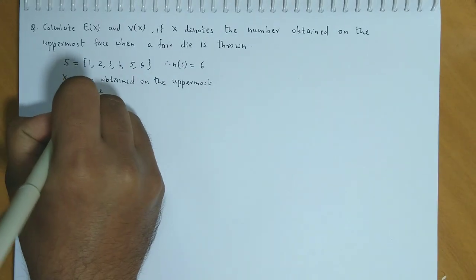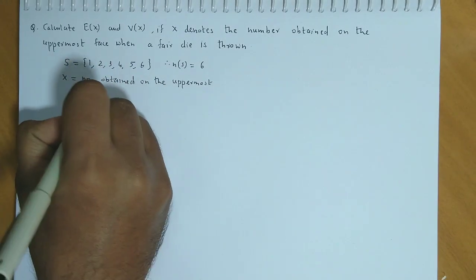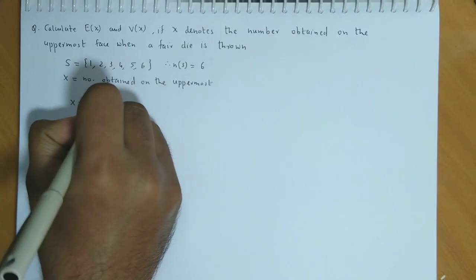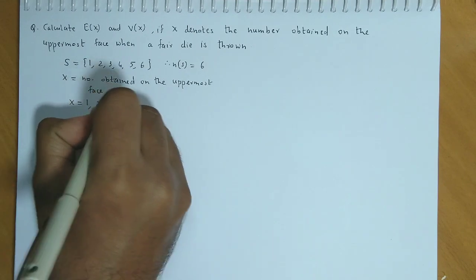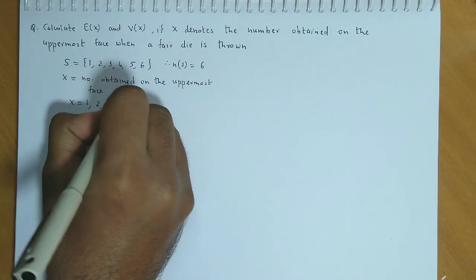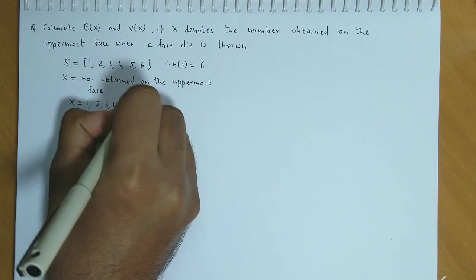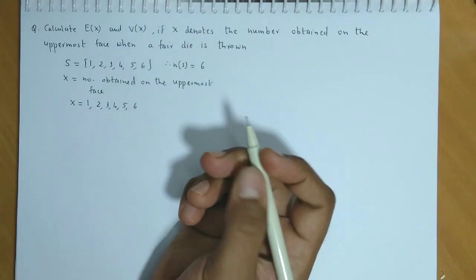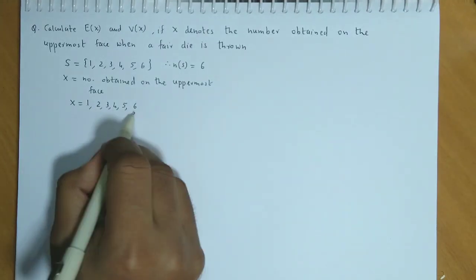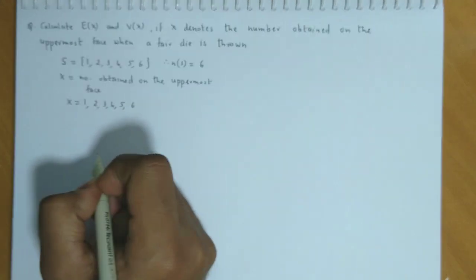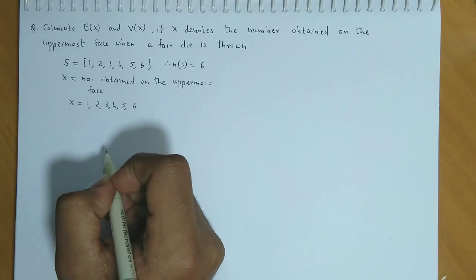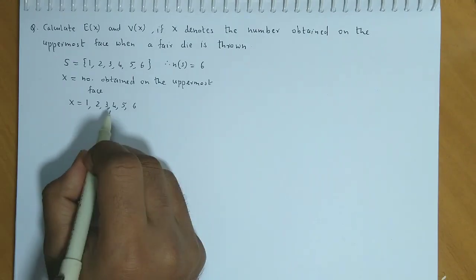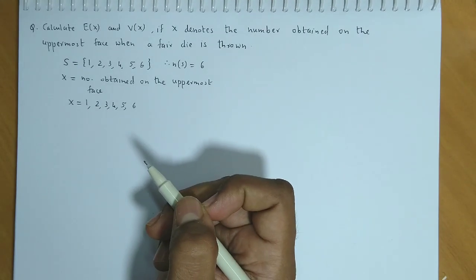The values of X will be 1, 2, 3, 4, 5, and 6, because these numbers are the uppermost face outcomes. Now we will make the probability distribution table.